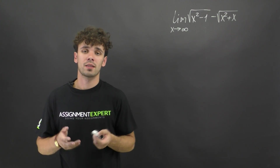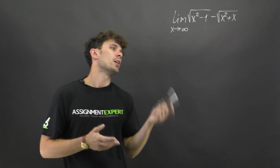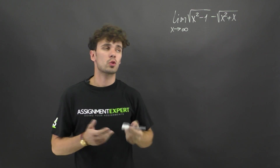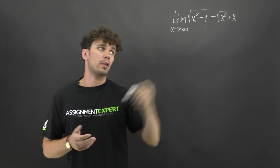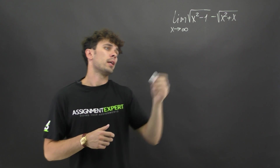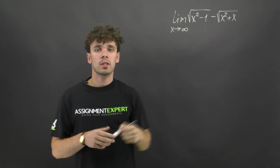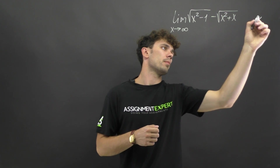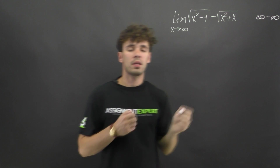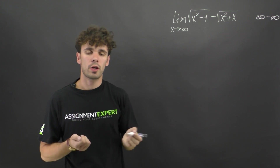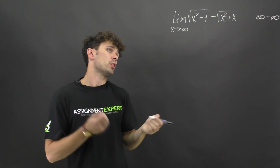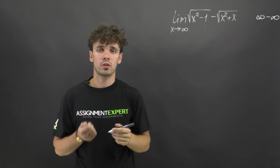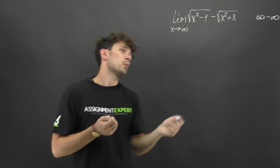Okay guys, we have another limit for you. Here we can see that this is a difference of two square roots, and x tends to infinity. If we insert infinity into our limit we will get infinity minus infinity. This is also an indeterminate form, so we need to once again somehow change the function under the limit sign.